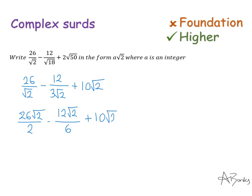I'm nearly there. I can cancel down these fractions a little. 26√2 divided by 2 is 13√2. 12√2 divided by 6 is 2√2, and then add 10√2. So in total, that is 21√2. And that's the answer to my question. A is an integer, A is 21.